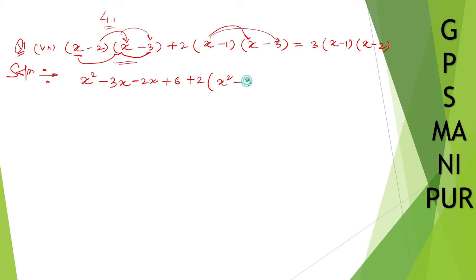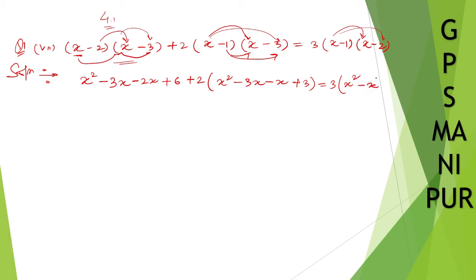x into 3 gives minus 3x. For minus 1: minus 1 into x gives minus x, and minus 1 into minus 3 gives plus 3 — minus into minus gives plus. Then for the right side: x into x gives x squared, x into minus 2 gives minus 2x, minus 1 into x gives minus x, and minus 1 into minus 2 gives plus 2.